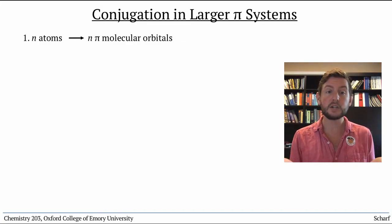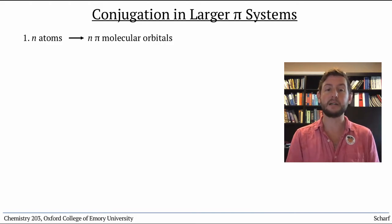25 atoms in the conjugated system, 25 pi molecular orbitals. N atoms, N molecular orbitals.